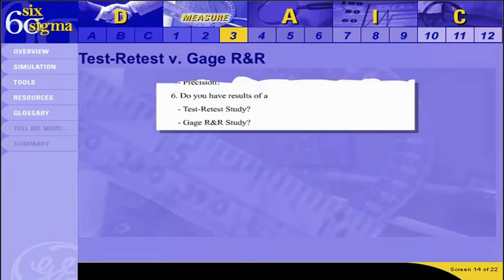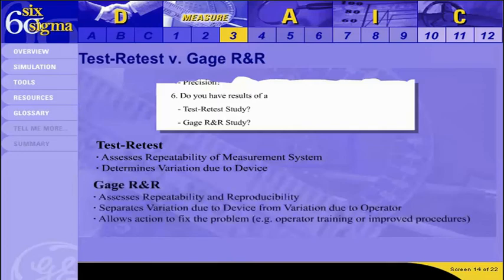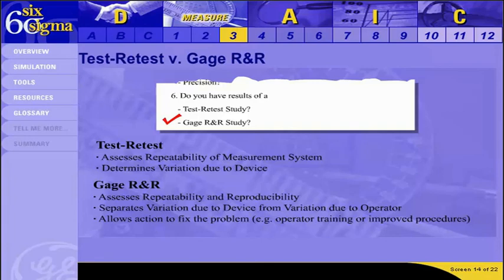The last item on the checklist refers to two tests to determine the amount of variation caused by a measurement system: the Test-Retest Study and the Gauge Repeatability and Reproducibility Study. A Test-Retest Study can look only at repeatability, telling you how much variation in your data is due to an inappropriate device. The advantage of Gauge R&R is that it can separate the individual effects of repeatability from those of reproducibility — showing variation due to the gauge and variation due to operators — allowing you to take targeted corrective action. For this reason, we are going to conduct a Gauge R&R for the commercial loan sales case.